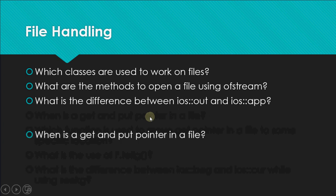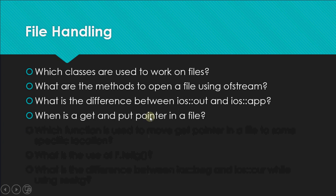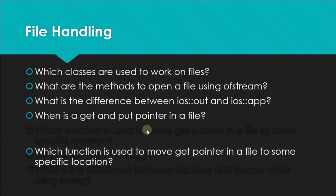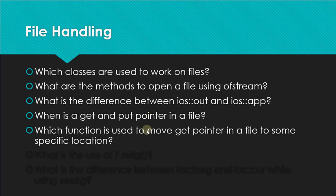What is a get pointer and a put pointer in a file? The get pointer stores the address of the location from where the next value will be read from the file. The put pointer stores the address of the location where the next value will be written to the file. So get is for reading and put is for writing.